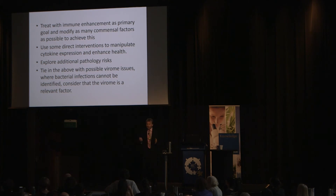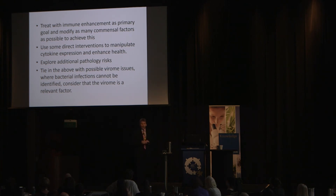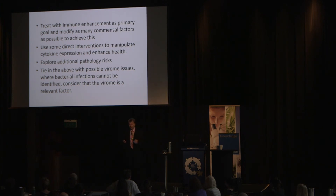I could treat him with immune enhancement as a primary goal and modify as many commensal factors as possible. I might use a direct intervention to manipulate cytokine expression and enhance health — these are all non-drug-based therapies; not antibody inhibition or monoclonal therapy. I could explore additional pathology risks by doing more tests. Proving a viral cause wasn't feasible because I couldn't easily identify viruses in the gut. There isn't a way of doing that for us.